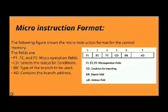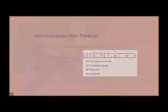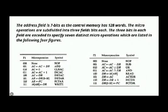The following figure shows the micro-instruction format for the control memory. The address field is 7 bits, as the control memory has 128 words. The micro-operations are subdivided into 3 fields, 7 bits each.